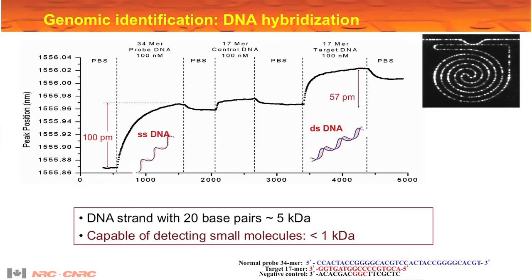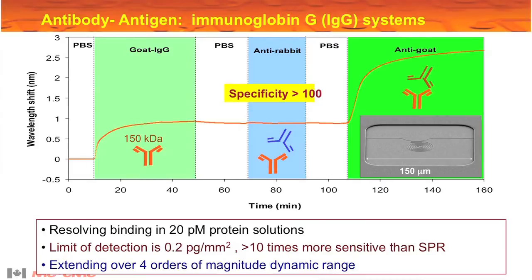With different probes you can capture all sorts of biomolecules. For example, you can basically do genome identification if you attach single-strand DNA on the surface. Or you can attach antibodies on the surface, then you can identify different kinds of antigens in the liquid.